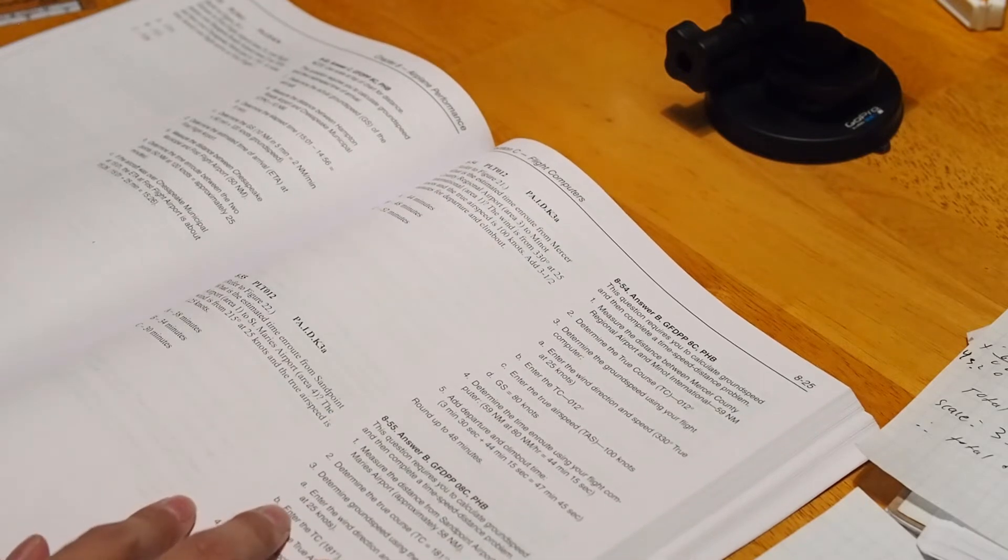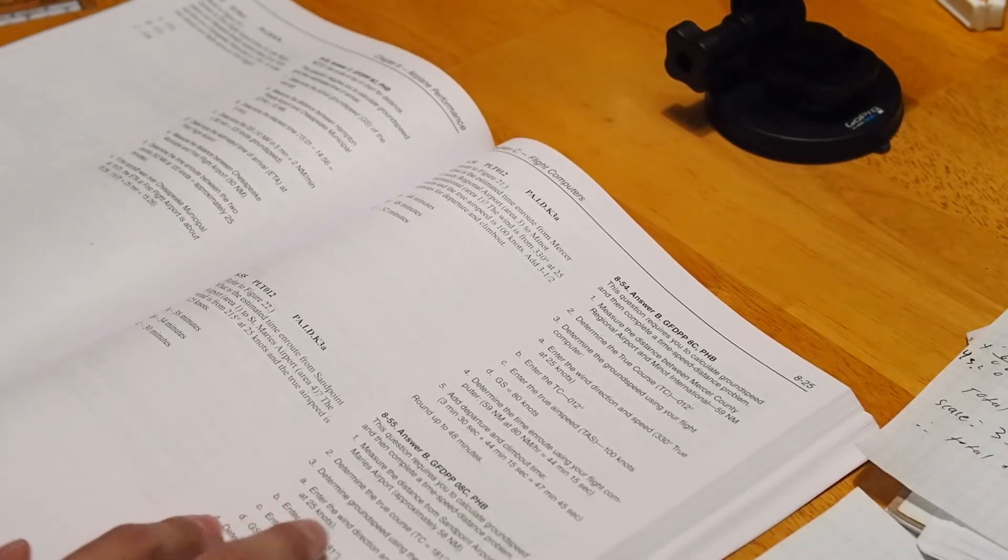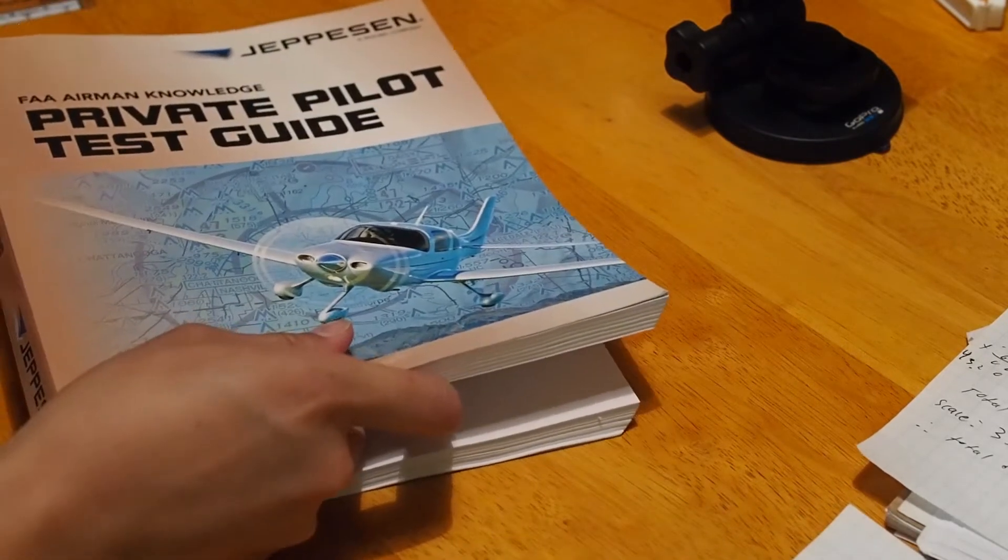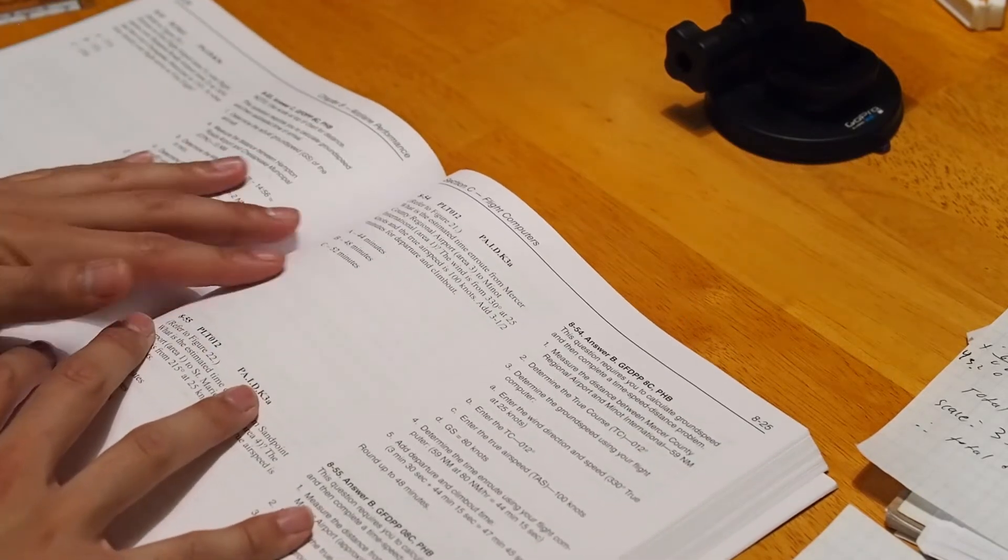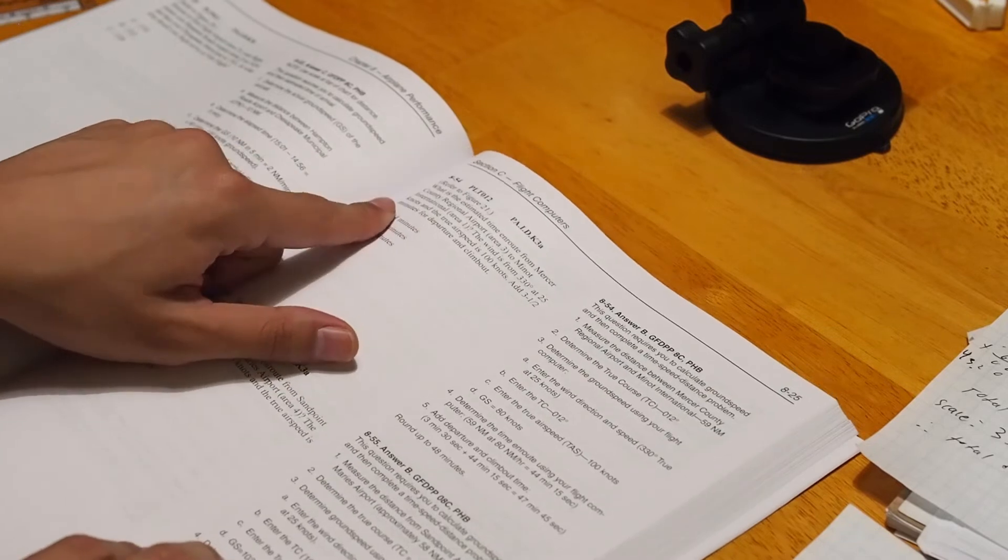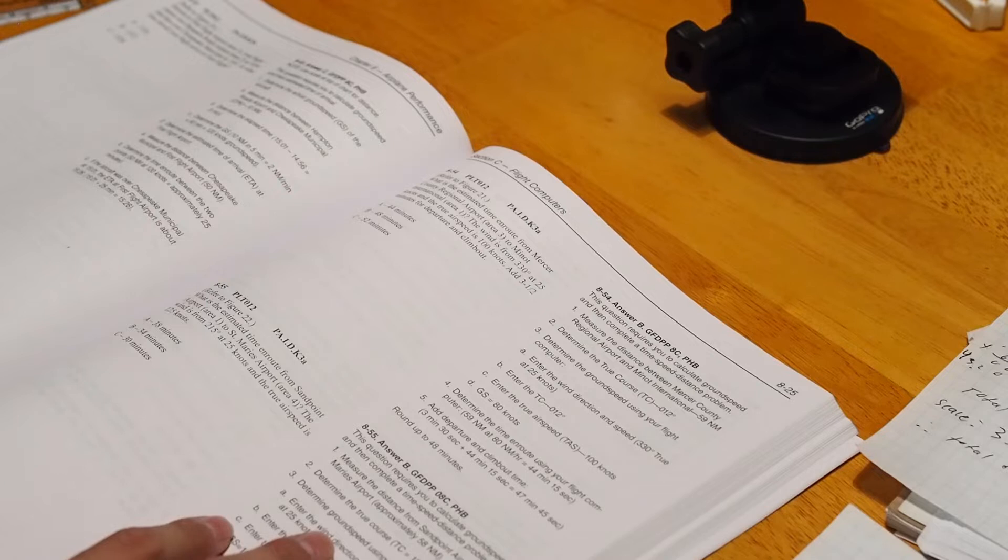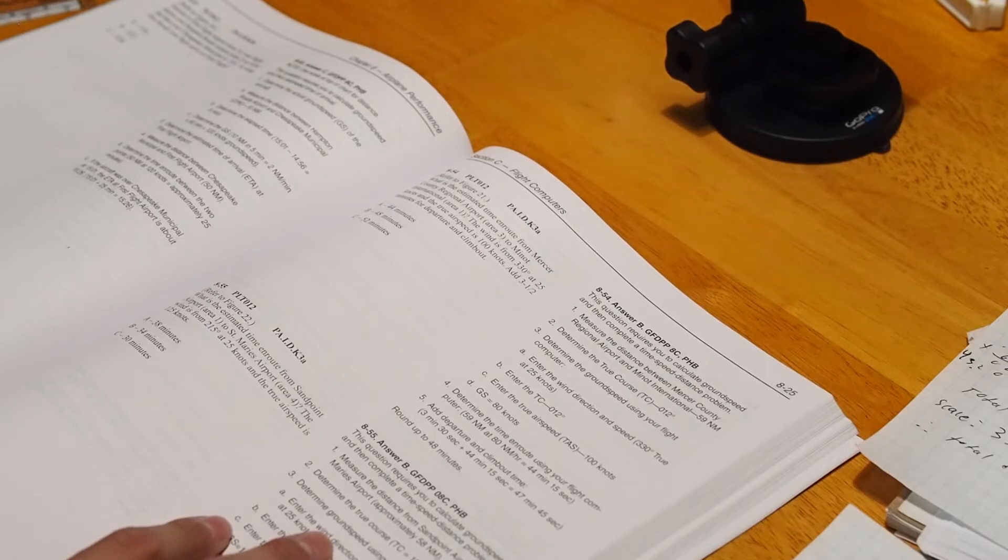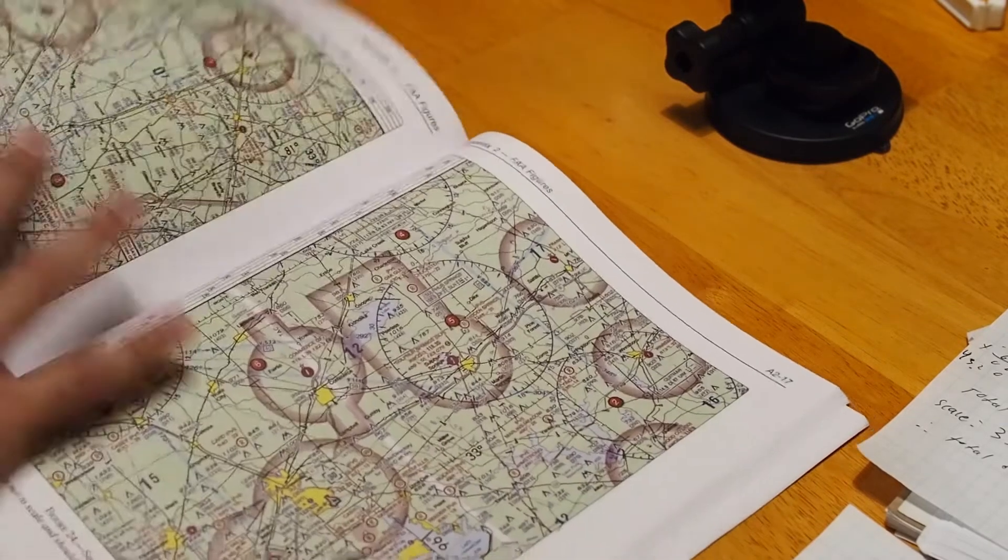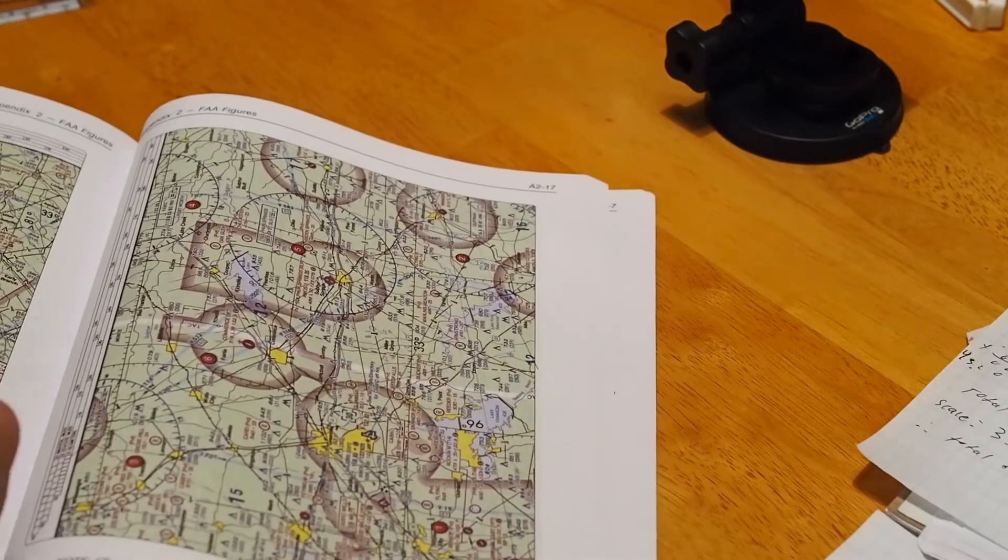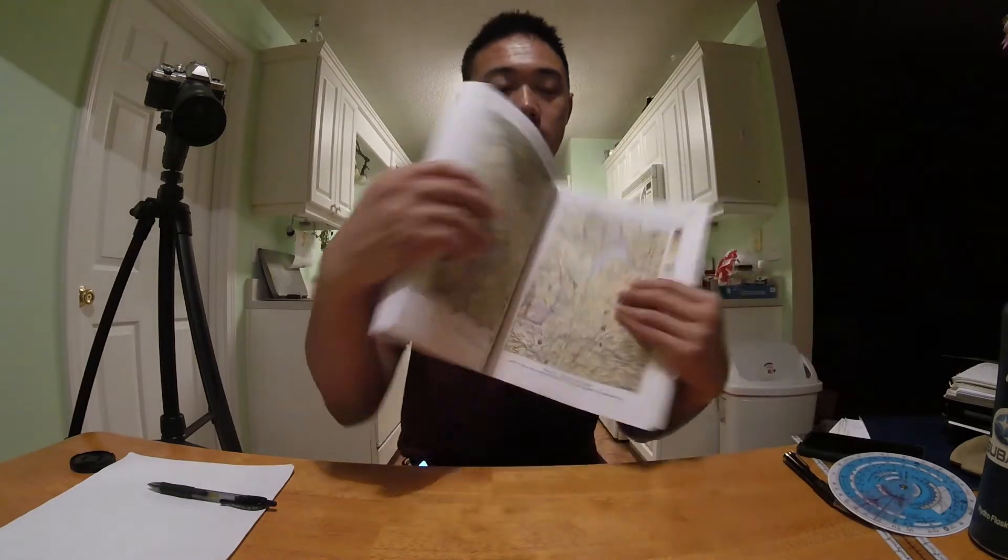We'll start this by doing an example problem and we'll go through the concepts as we go along. So if you want to go to your Jefferson Private Pilot Test Guide, go to problem 8.54. The problem reads: What is the estimated time en route from Mercer County Regional Airport to Minnow International? The wind is from 330 at 25 knots and the true airspeed is 100 knots. Add three and a half minutes for departure and climb out. We would go to figure 21 in the back of the book, which looks like this.